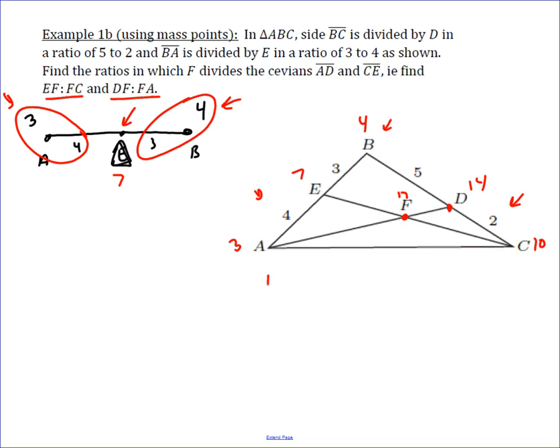But that means that EF over FC – well, their lengths have to be in the opposite proportion to the mass needed on their endpoints to balance it, which is what we've done on this problem. And so that means EF to FC is going to be 10 to 7.